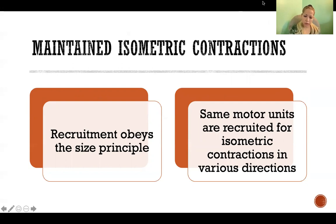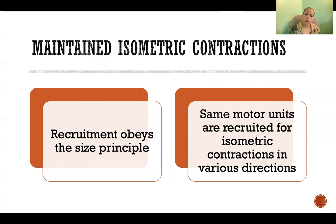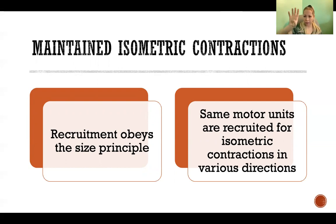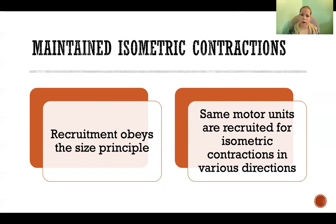Maintained isometric contractions obey the size principle — we recruit in order from smallest motor neuron and smallest muscle fibers to largest motor neurons and largest muscle fibers. The same motor units are recruited for isometric contractions occurring in different force directions. Even though there's no movement because it's isometric, the direction that the force is aimed — such as the difference between force applied in one direction versus another — even when the direction of force is different, generally speaking the same motor units are still recruited in the same order obeying the size principle.